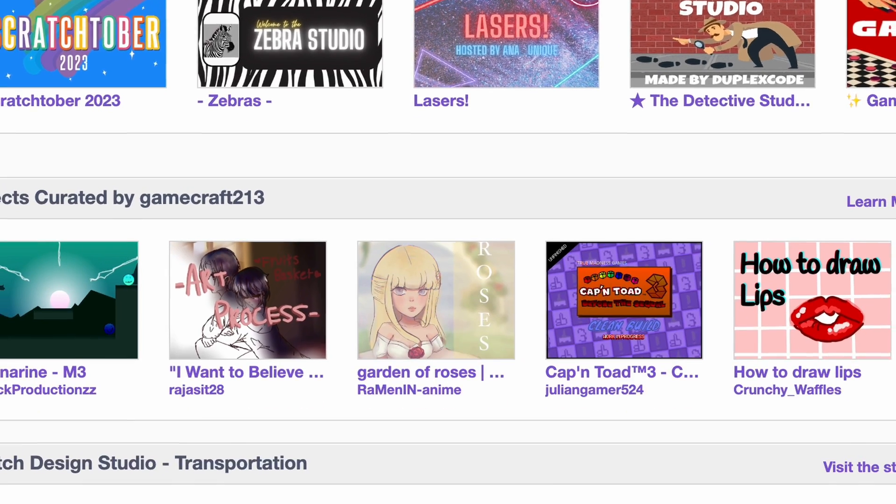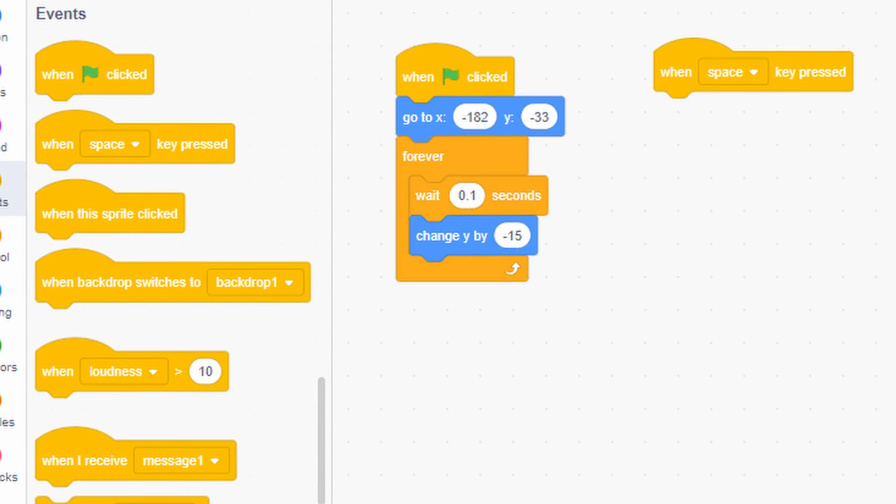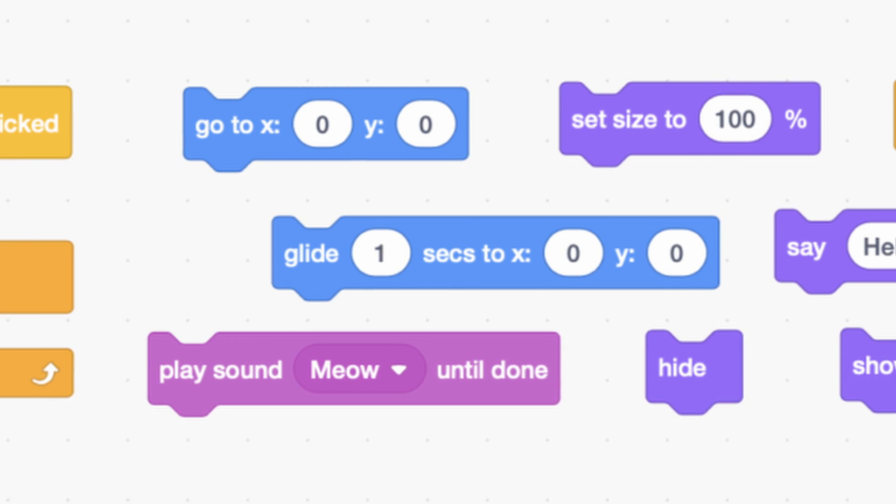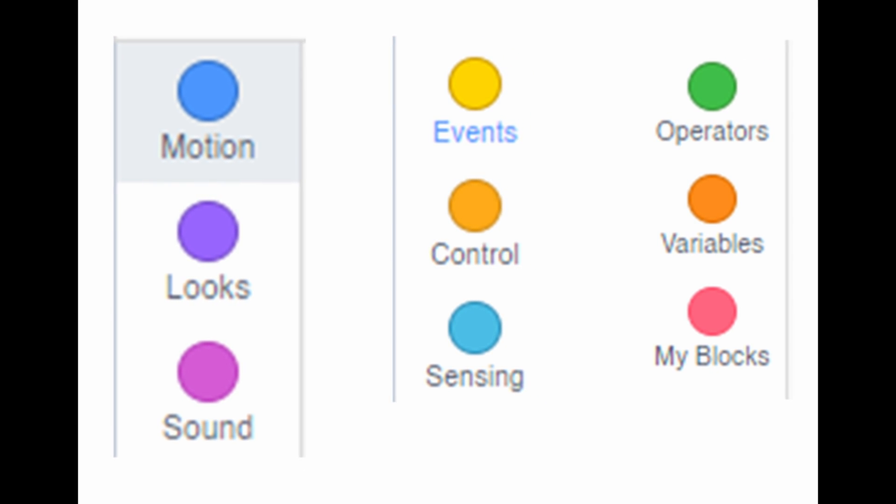Scratch is visual and also intuitive. Scratch is a platform specifically designed for kids. Core programming concepts are showcased through visually appealing blocks of all different colors, separated into different categories, which anyone can quickly remember.